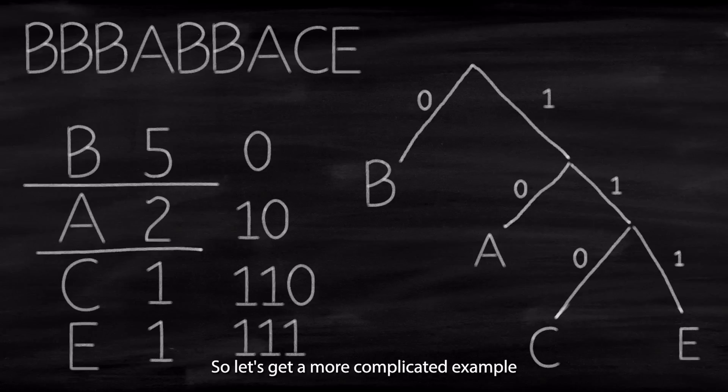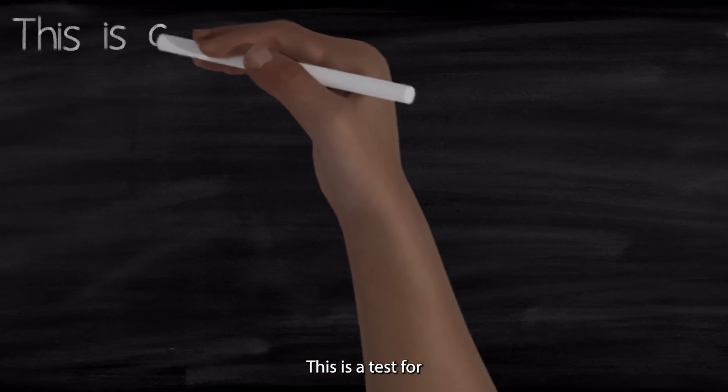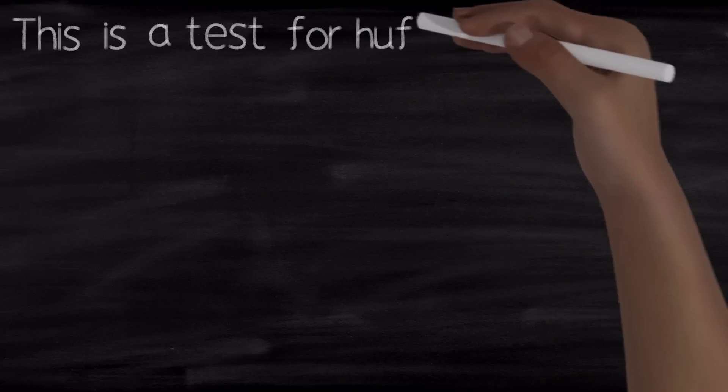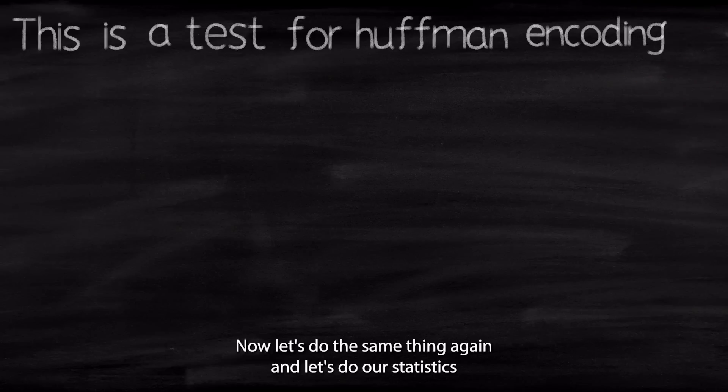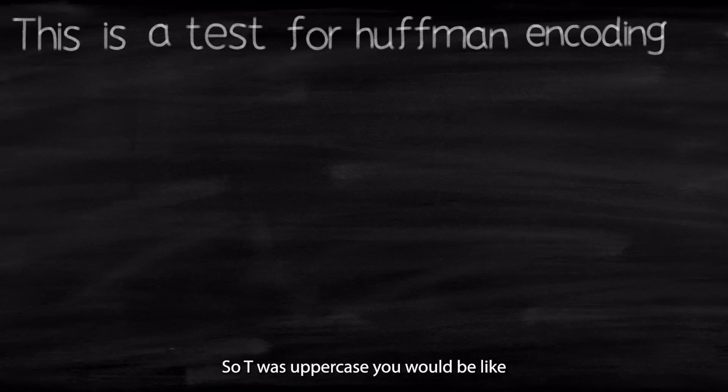All right. So let's get a more complicated example. Now we have this string. This is a test for Huffman encoding. Now, let's do the same thing again. And let's do our statistics and frequencies. So we have got, let's just ignore the case for now. So uppercase T would be like lowercase T. And let's do our statistics table.